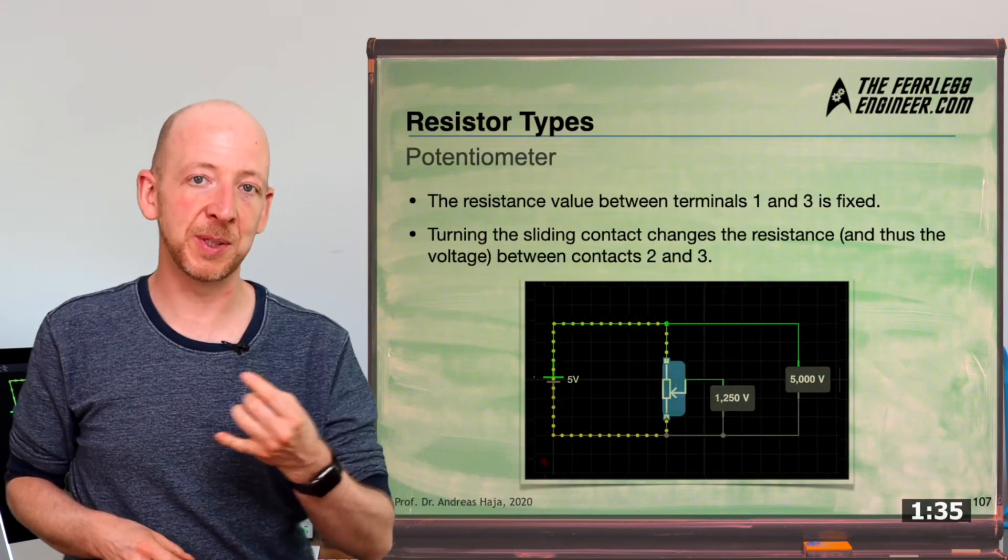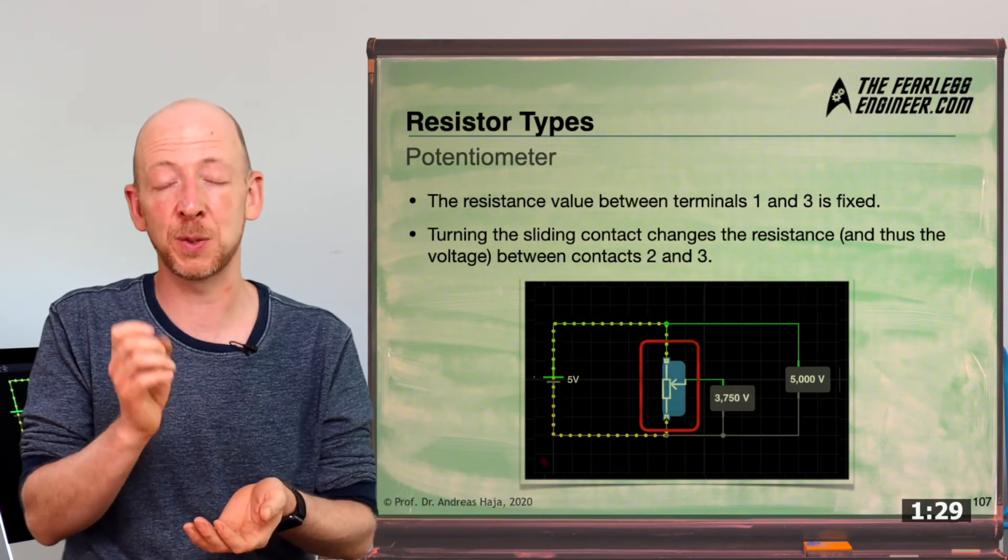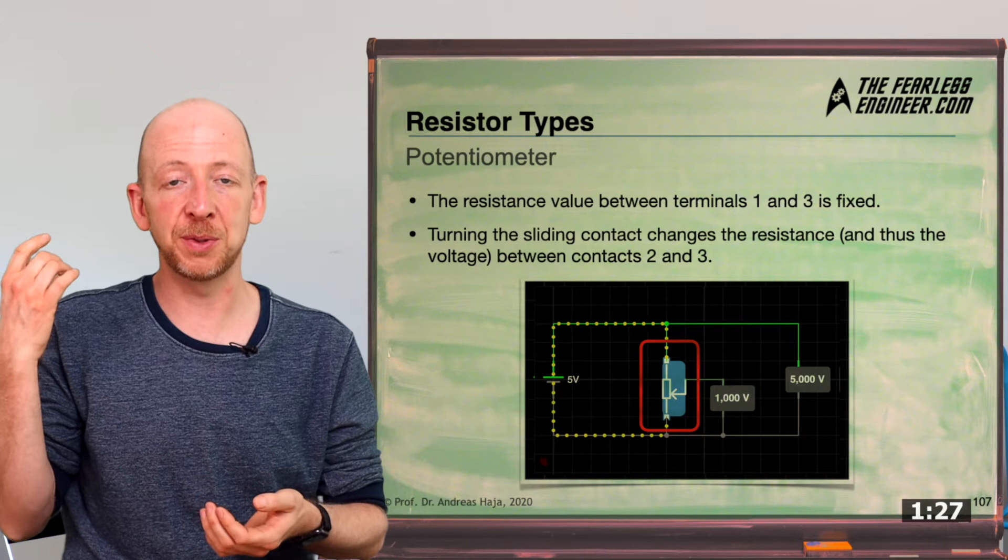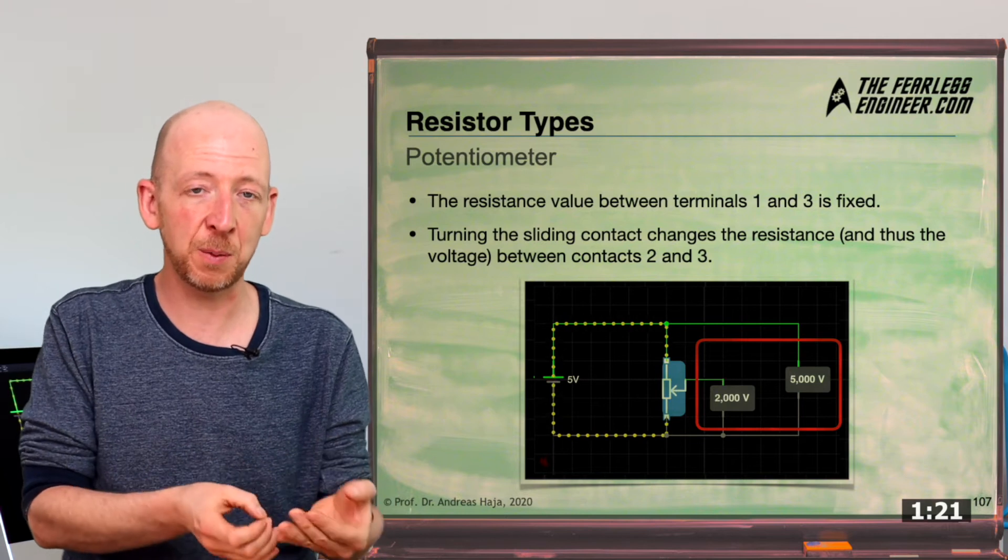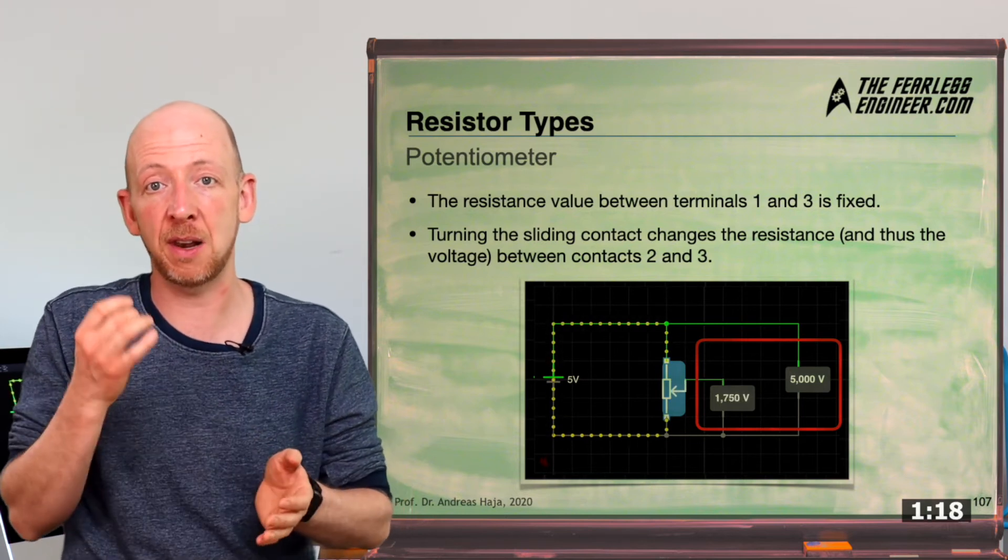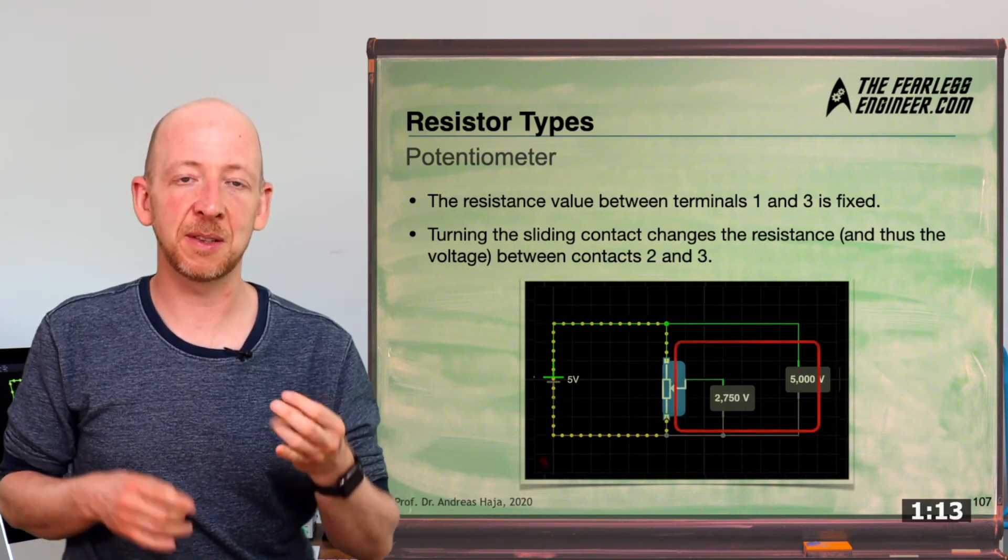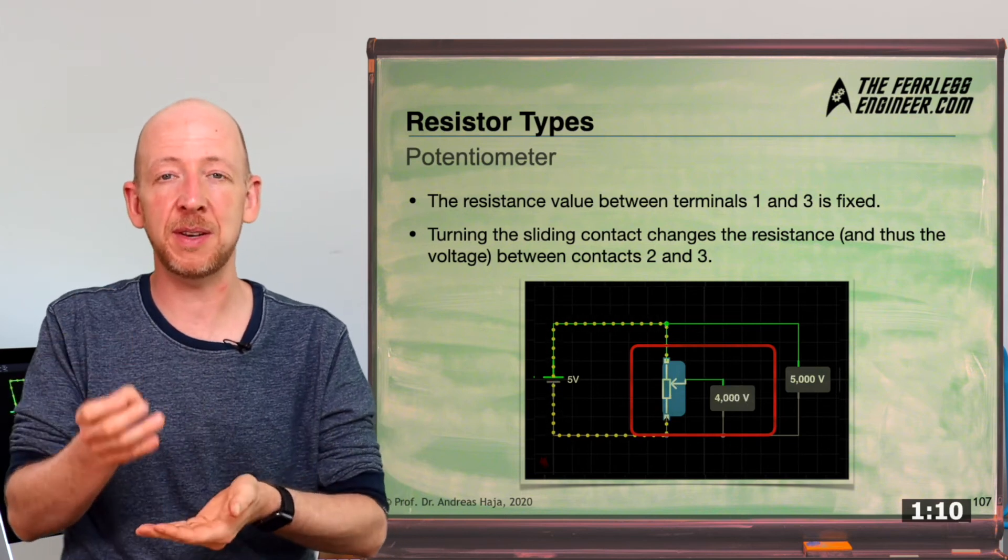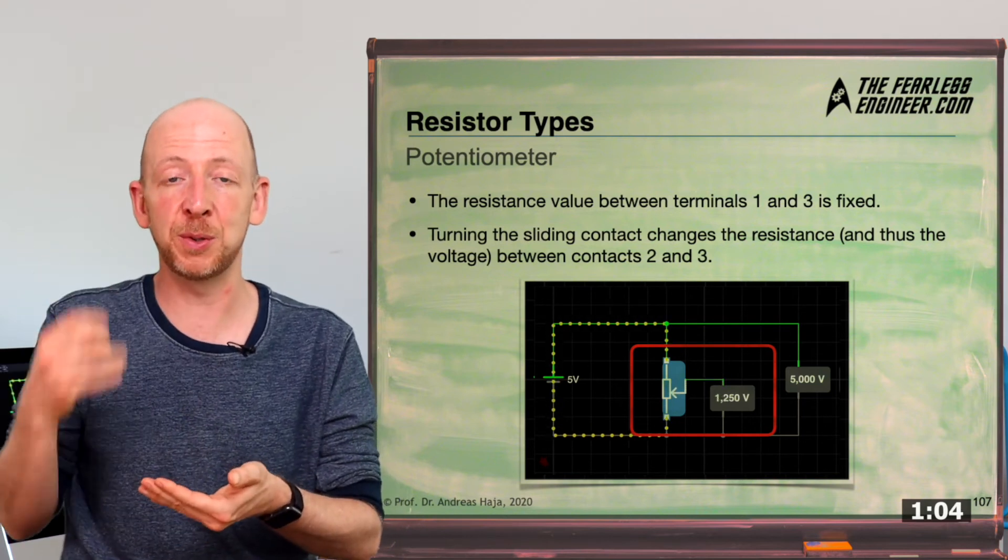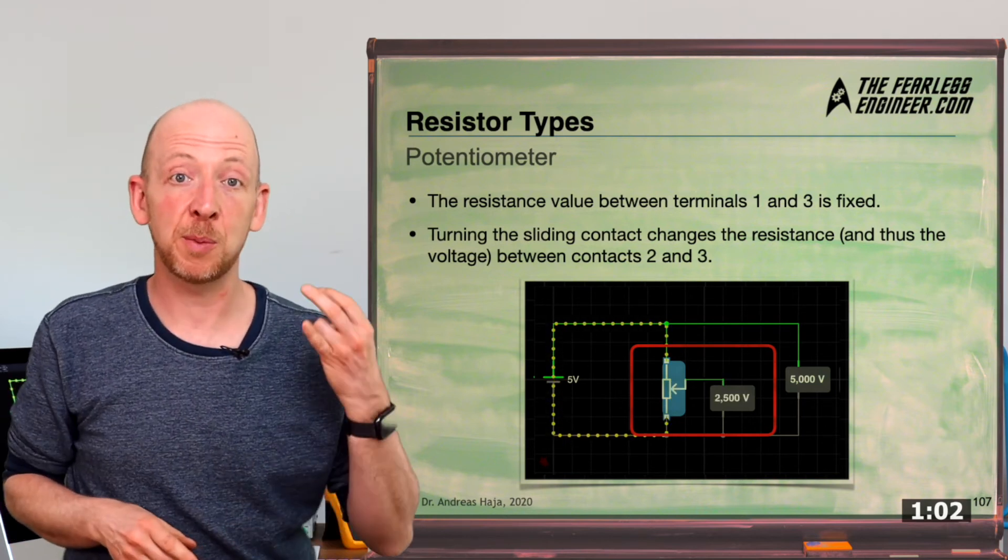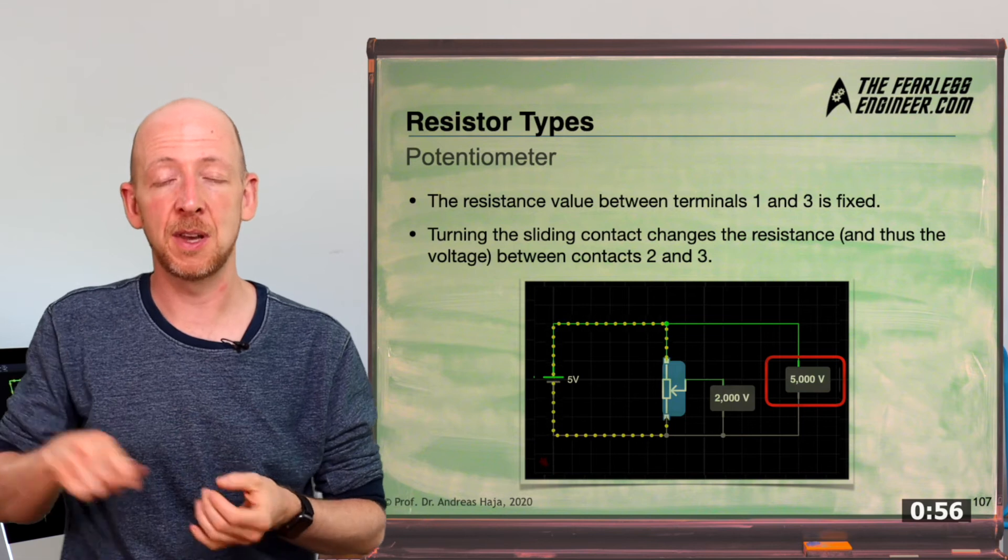And in the simulation here, you can see the principle even better. On the left side is a five-volt power supply. And in the middle, you can see the potentiometer with its connections one, two, and three. And the two gray boxes on the right are both voltmeters. And in the animation, you can see that the voltage between terminals two and three varies depending on the position of the contact between the maximum value of five volts and a minimum value of zero volts when terminal two moves downwards. And the voltage drop over the entire potentiometer here remains constant throughout the simulation because the length of the circumference doesn't change.